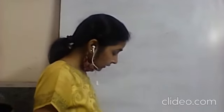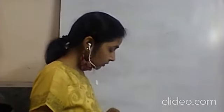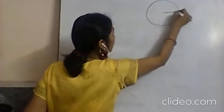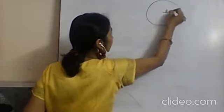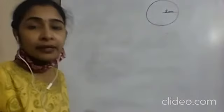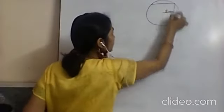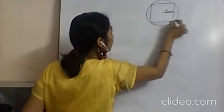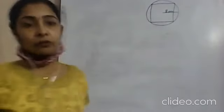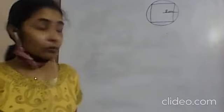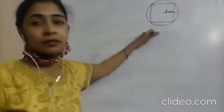Find the area of the largest square that can be drawn inside a circle of radius 8 cm. We are given a circle with radius 8 cm. We need to find the area of the largest square. To find area of the square we need its side, and for that we need to find the diagonal first.